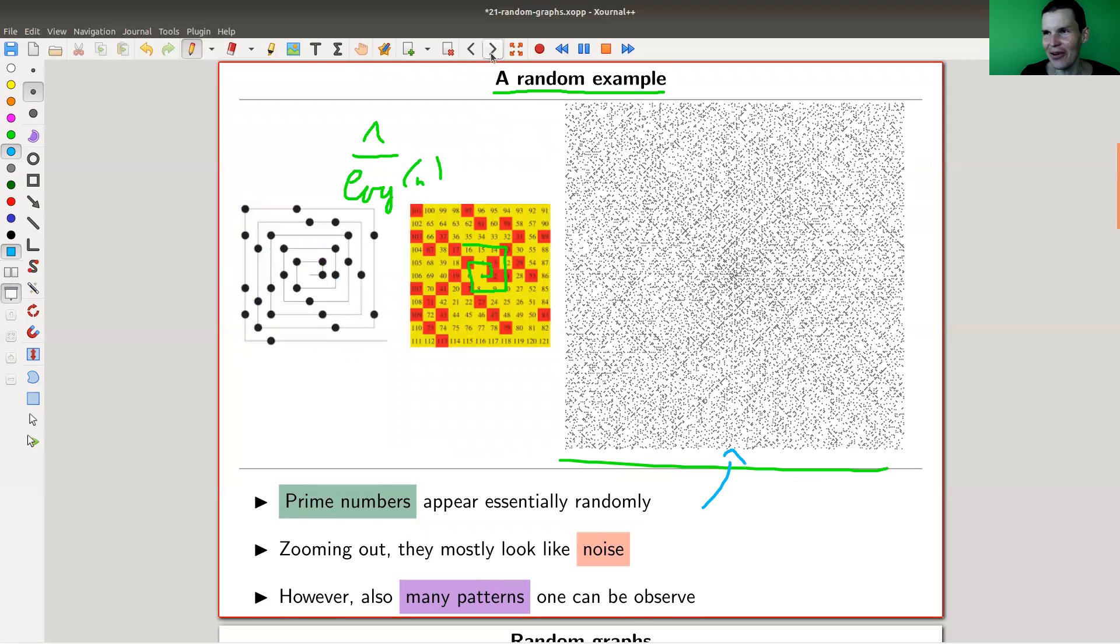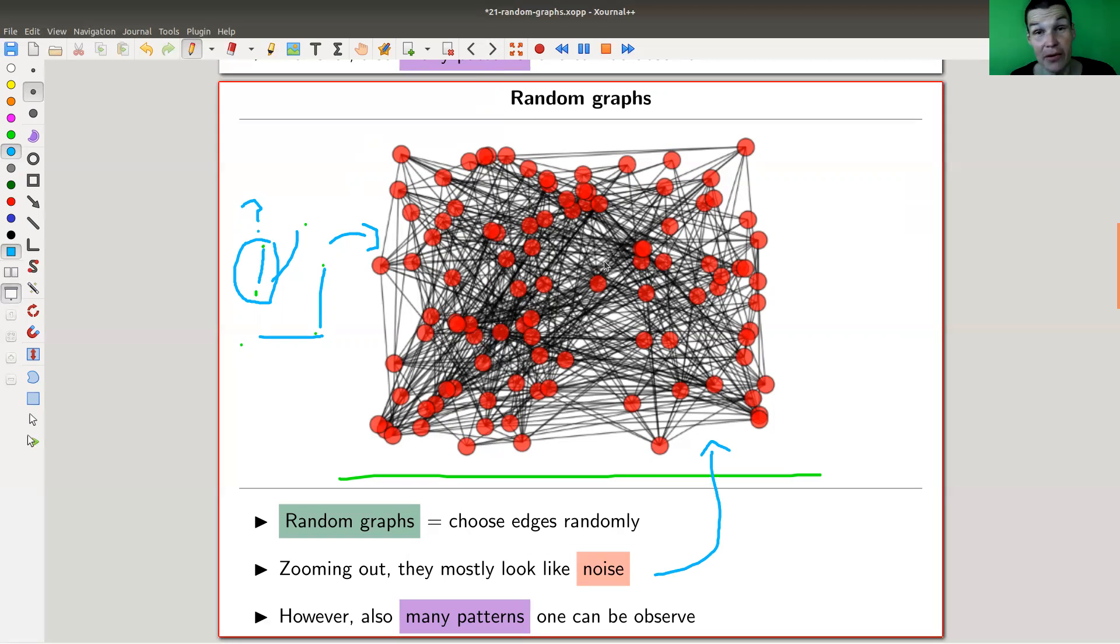Whatever you get is called a random graph. It's essentially like noise. I really like this because here is essentially noise, this one looks like noise, this one here looks like noise. That's very similar actually. But as we have learned from prime numbers or from the prime number example and for many other examples out there, noise might still have some patterns and we might still be able to say something about those random graphs. Random graph: just choose edges randomly.